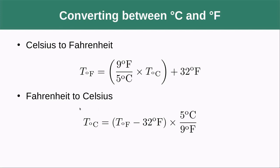If we want the temperature in degrees Celsius and we know it in Fahrenheit, we have to subtract out that 32 degrees Fahrenheit, and then we have to multiply by five ninths this time, so the reverse of this guy.